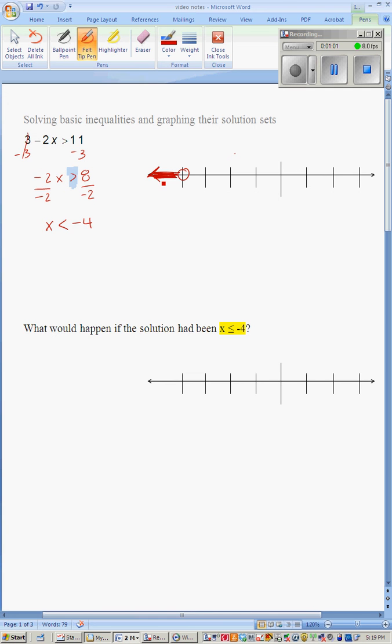If you write your variable first, your inequality will point in the direction that you should be coloring.